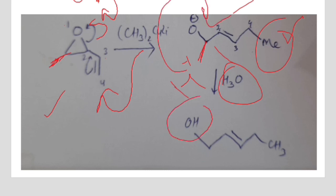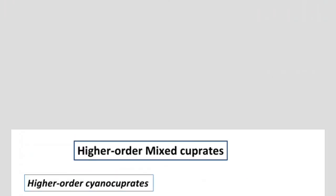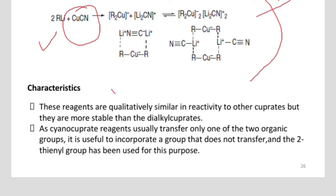Now in the case of higher-order mixed cuprates: to form mixed cuprates, we react an alkyl lithium with copper cyanide to form mixed and higher-order cuprates. These reagents are qualitatively similar in reactivity to the other cuprates.